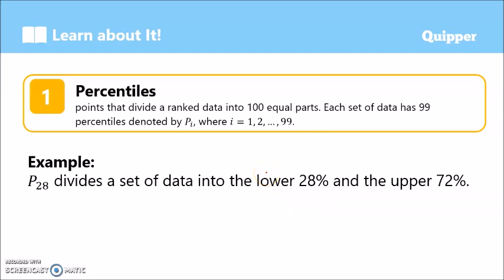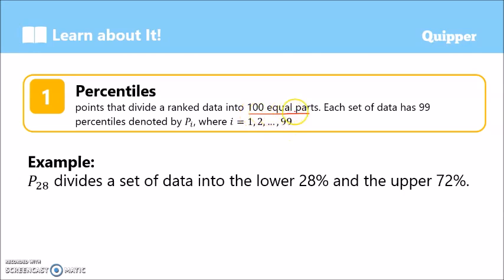First, let us recall what percentile is. Percentiles are points that divide a ranked data into 100 equal parts. Each set of data has 99 percentiles, denoted by P sub i, where i stands for 1, 2, 3, and so on up to 99. So take note, it divides a ranked data into 100 equal parts, but we only go up to the 99th percentile.